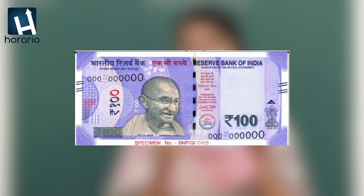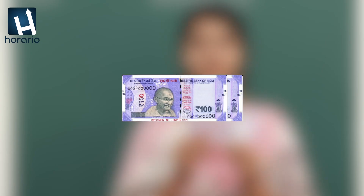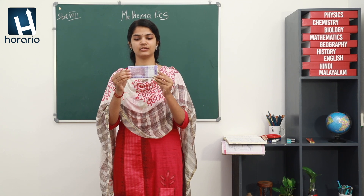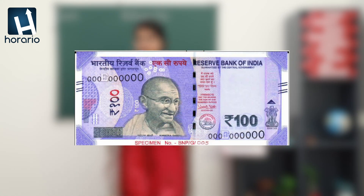Now, how many currency notes can you see here? Okay, your answer will be 1, right? But actually it is 2 currency notes. Why do you say it is only 1 currency note? Because I have placed 2 currency notes in a particular manner such that you can see only 1 currency note.